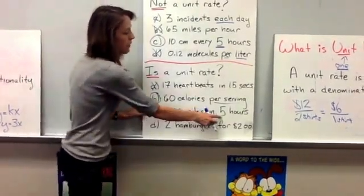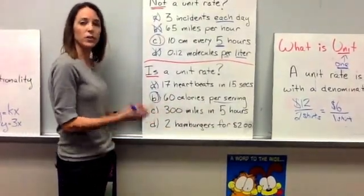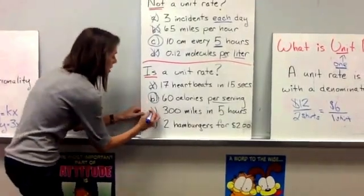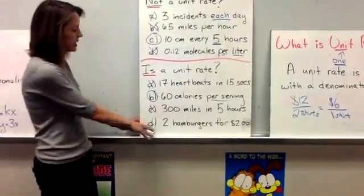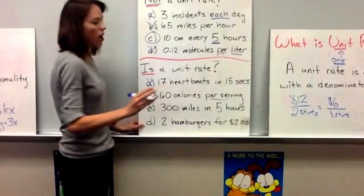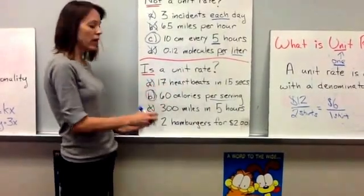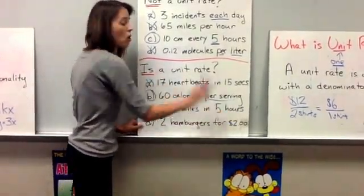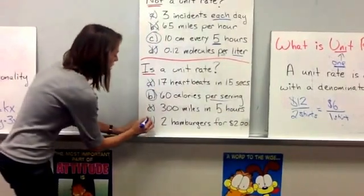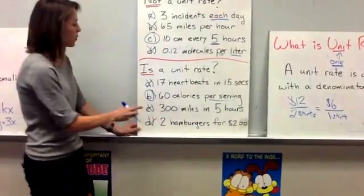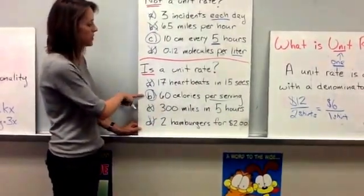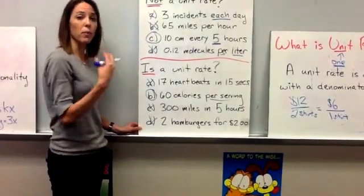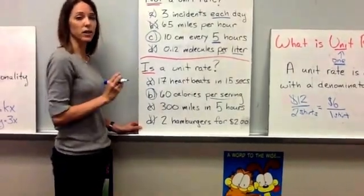300 miles in five hours. Five hours is not one hour, so this one is not a unit rate either. And D says two hamburgers for $2. In order for that to be a unit rate, it would have to say how many hamburgers for $1. So this one is not a unit rate. So the only one that is a unit rate is B, 60 calories per serving. Remember, the per and one is going to be your key.